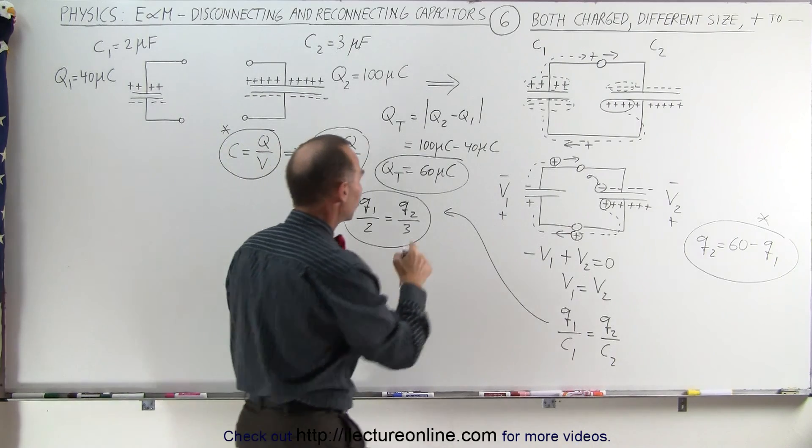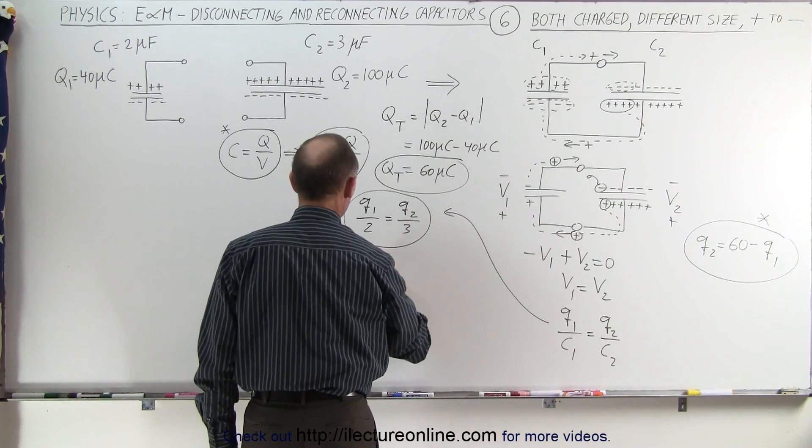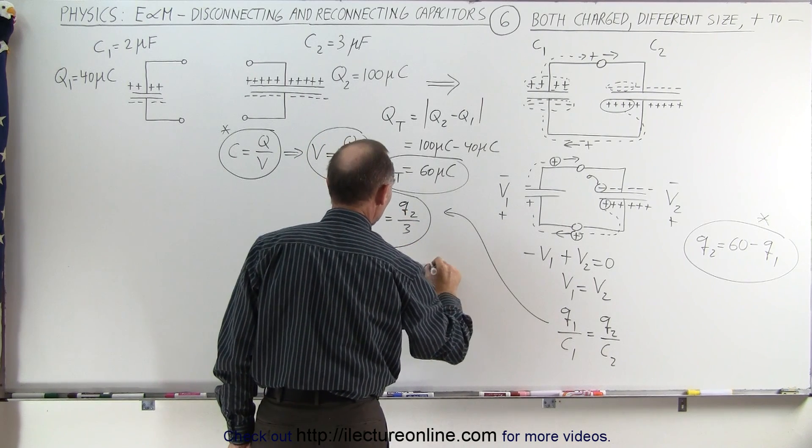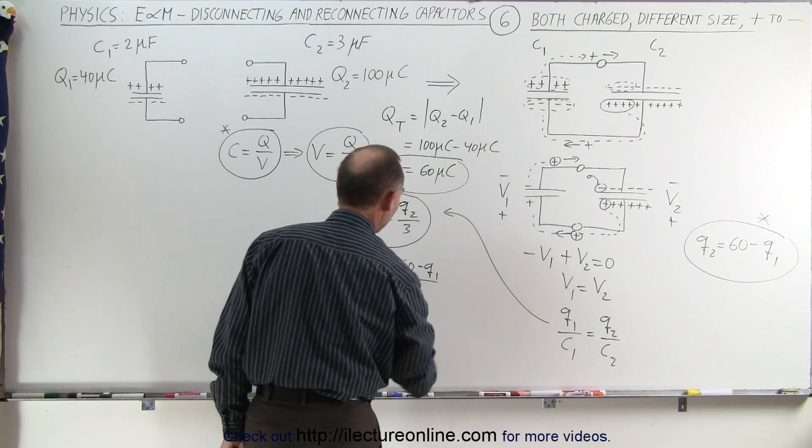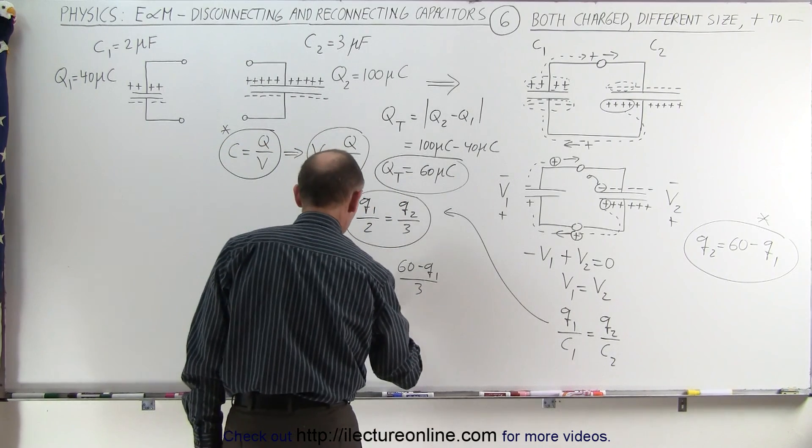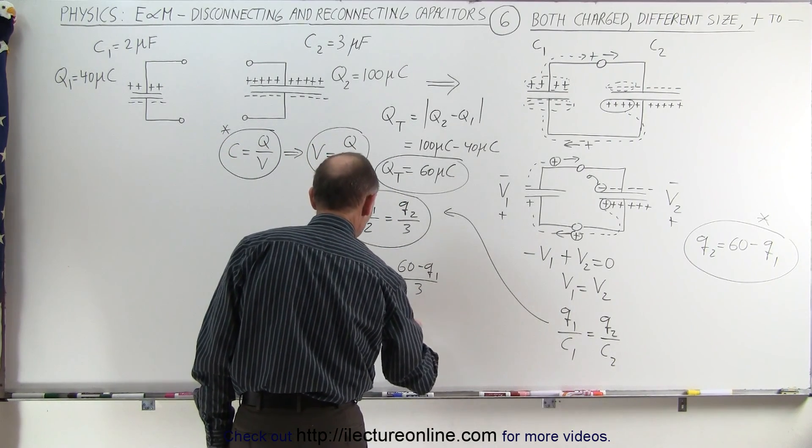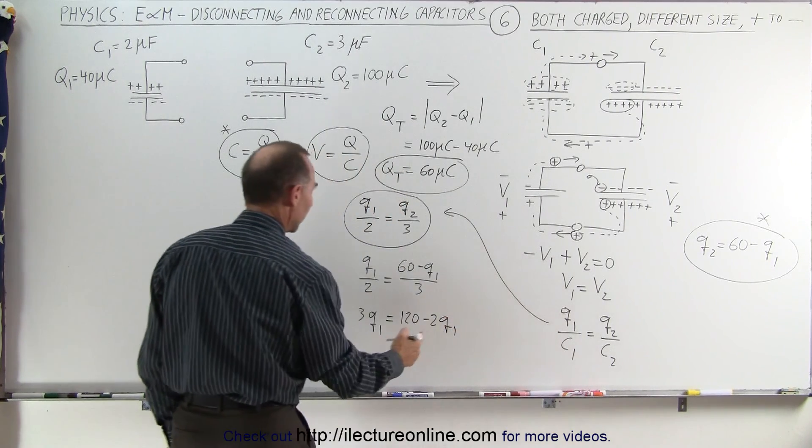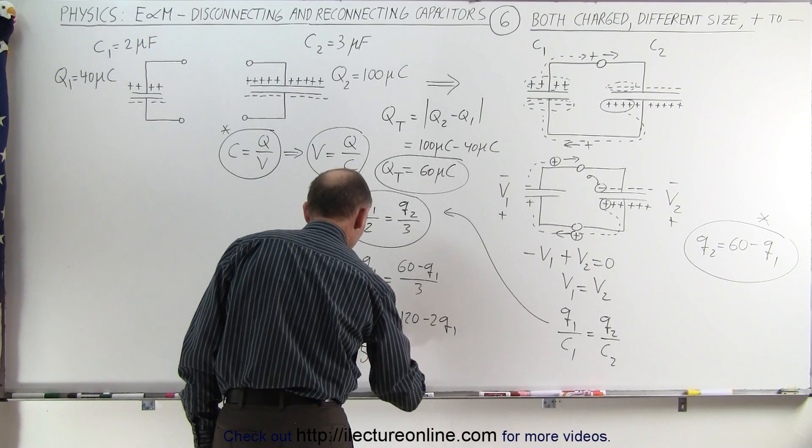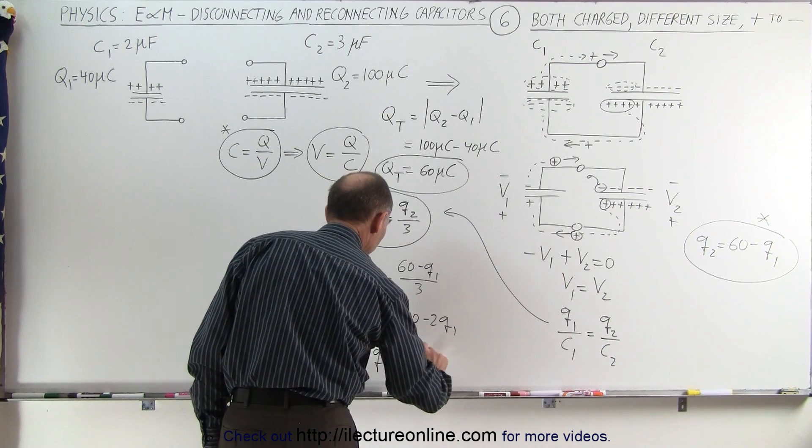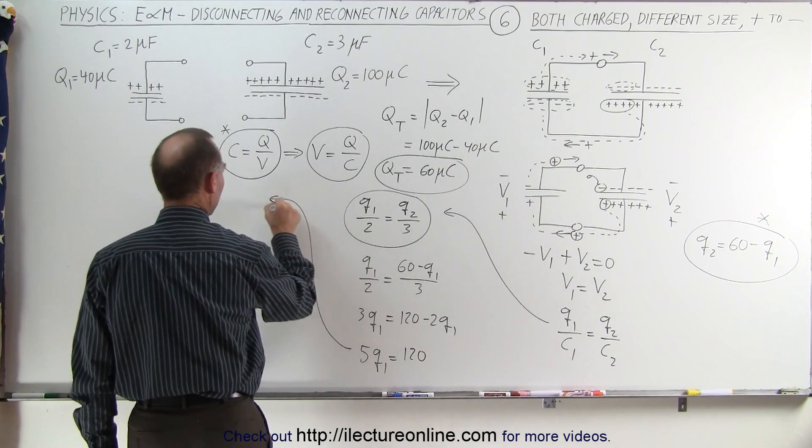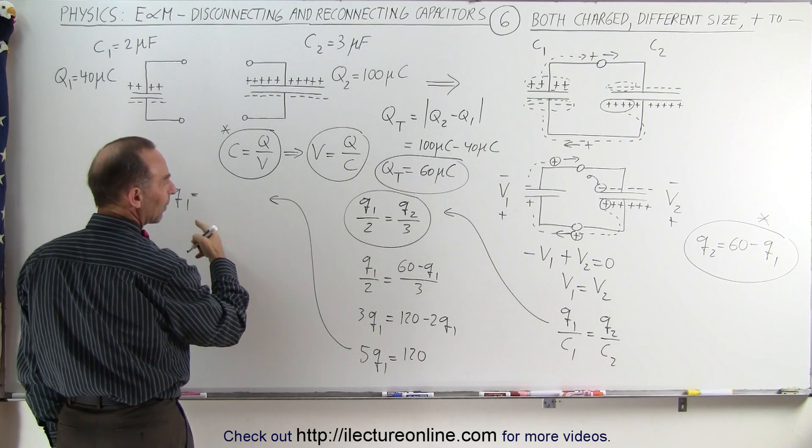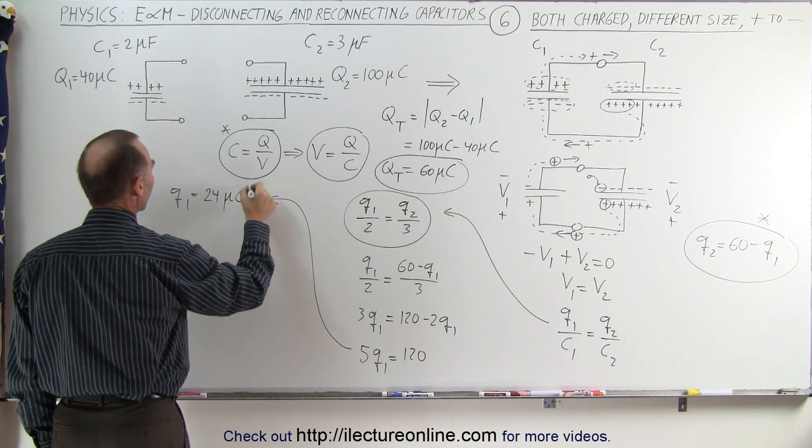If we now replace Q2 by that quantity right there, we have Q1 divided by 2 is equal to Q2, which is 60 minus Q1 divided by 3. Now cross multiplying, we get 3Q1 is equal to 120 minus 2Q1. Moving that across over here, 5Q1 is equal to 120, or I can say that Q1 is equal to 120 divided by 5, or 24 microcoulombs.